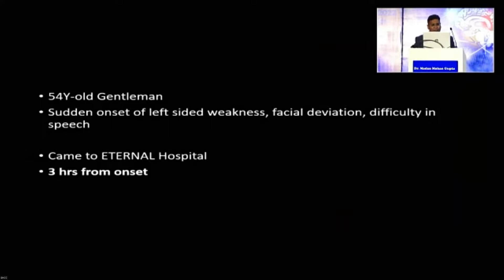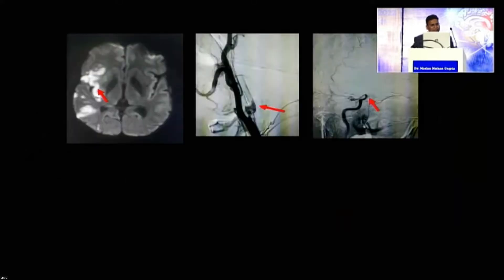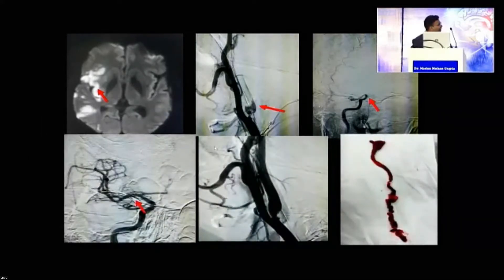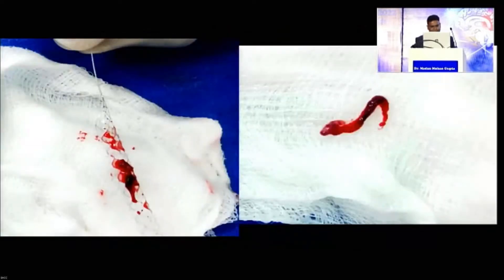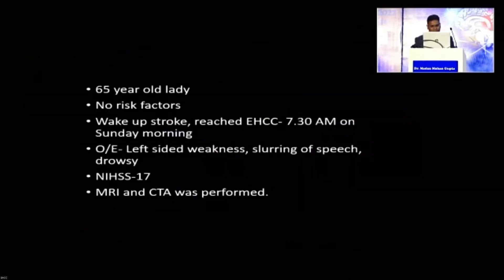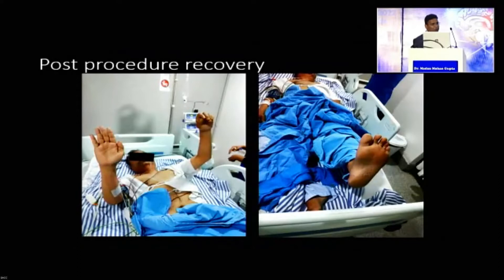Another case: a 54-year-old gentleman who came within three hours with right MCA stroke on diffusion-weighted MRI. DSA showed tight stenosis at the right ICA origin with distal thrombosis, and a T-occlusion after the ophthalmic artery. We achieved complete recanalization with TICI 3 flow. We did not stent immediately because it was the active stage; we did angioplasty first, then stenting at two to six weeks. The clot was retrieved, CT showed very small infarct, and recovery was seen just after the procedure in the ICU.